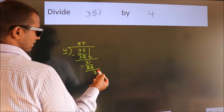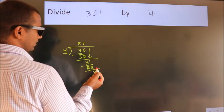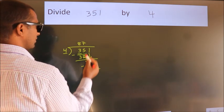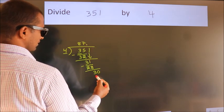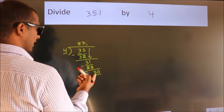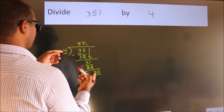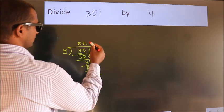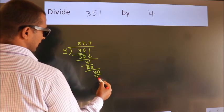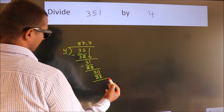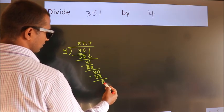After this, no more numbers to bring down. So what we do is we put a dot and take 0. 30. A number close to 30 in the 4 table is 4 times 7, 28. Now we subtract. We get 2.